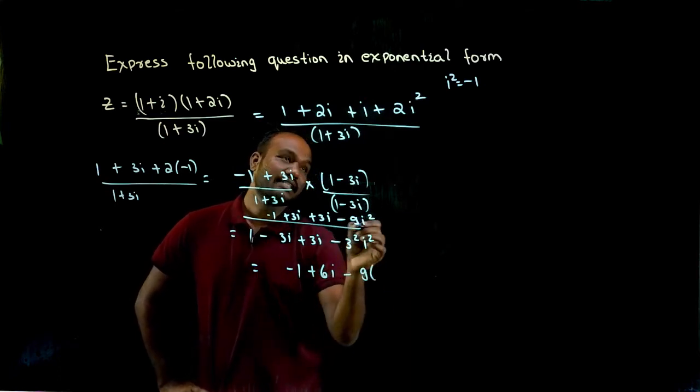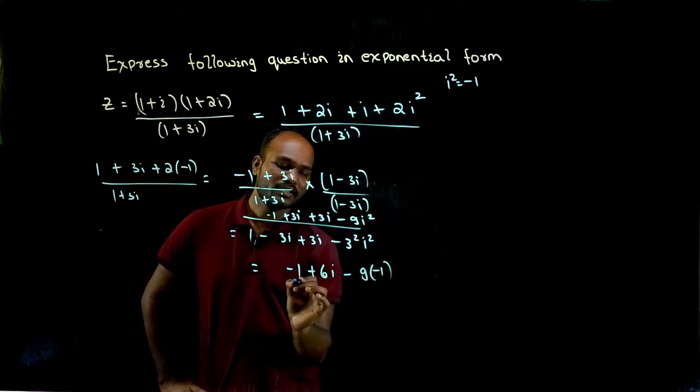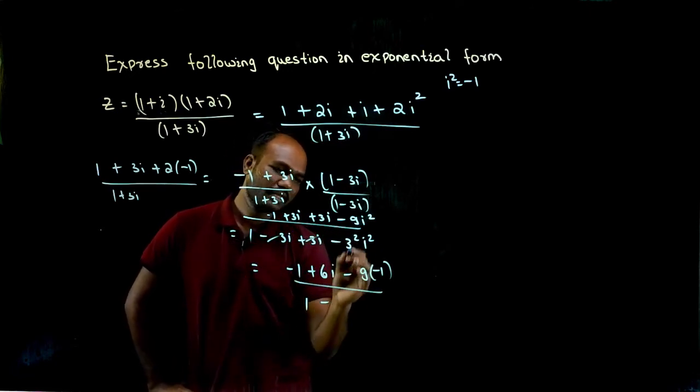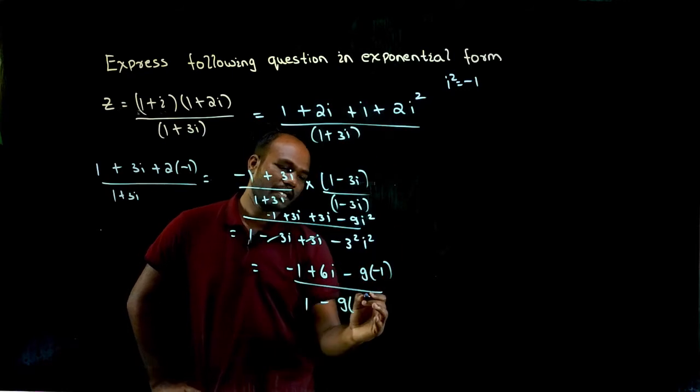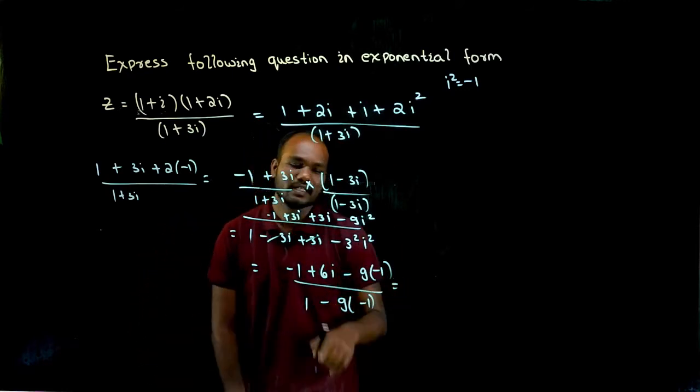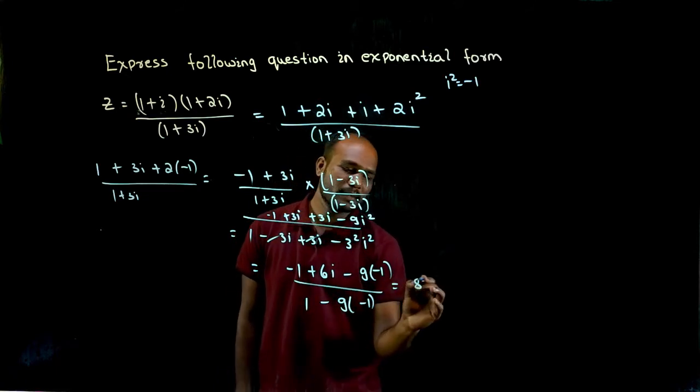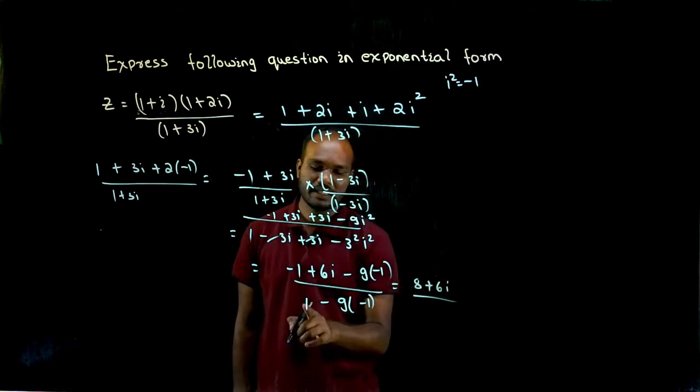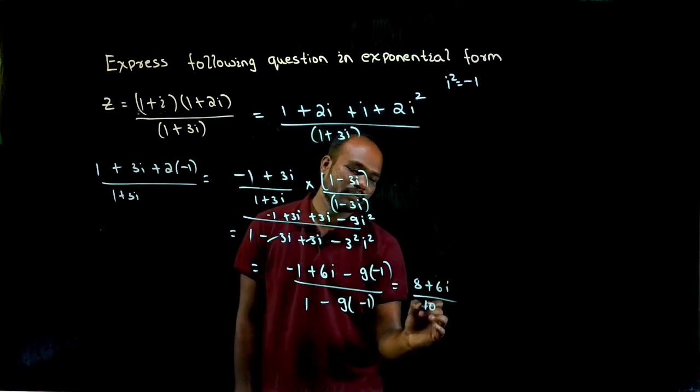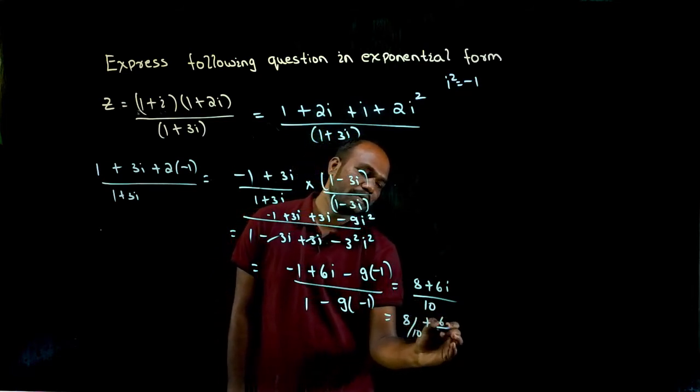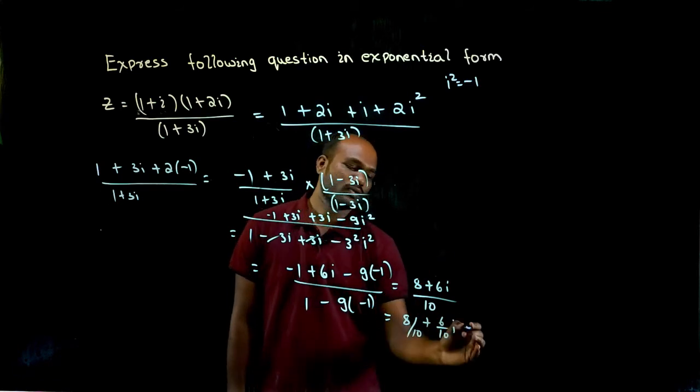Minus 9 into i square value is minus 1, so just substitute minus 1 divided by 1. This and this and this get cancelled, so minus 3 square is 9, i square value is again minus 1. So if I solve it: minus 1, minus into minus is plus, so plus 9 minus 1 is 8 plus 6i divided by 1, minus into minus is plus, 9 plus 1 is 10.